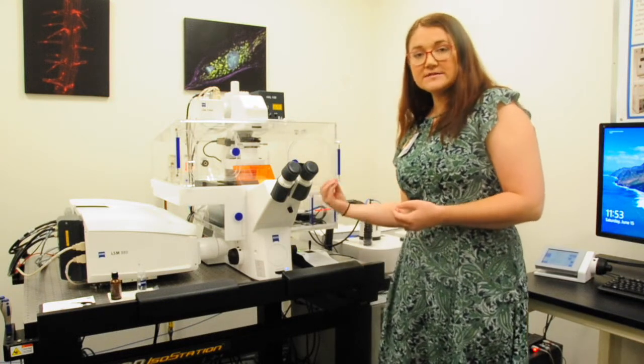It is then collected through the objective, comes back through here, and we have our PMTs in here. This particular variety has two PMTs and a 32 GaAsP detector array.